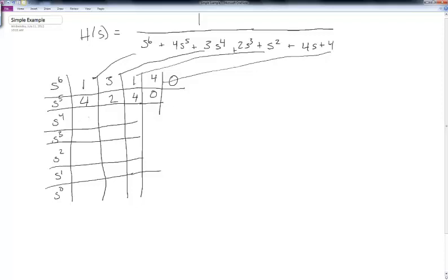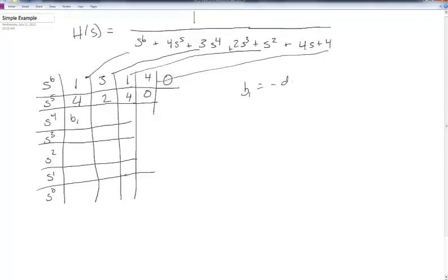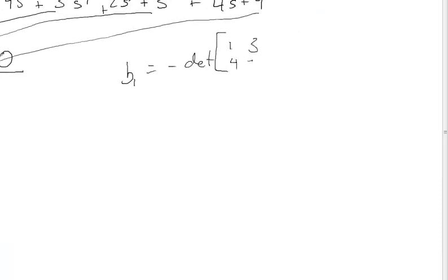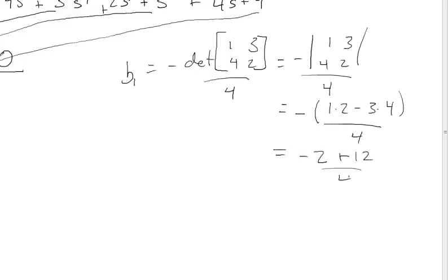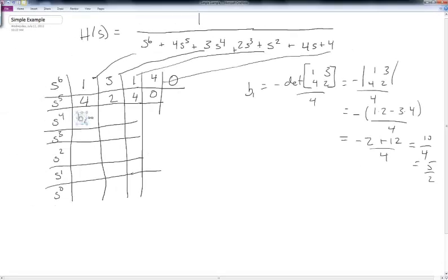Now we do our cross-multiply and divide. B1 = −det([1, 3; 4, 2]) / 4 = −(1·2 − 3·4) / 4 = −(2 − 12) / 4 = 10/4 = 5/2. So B1 = 5/2.